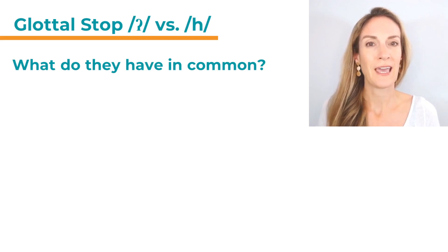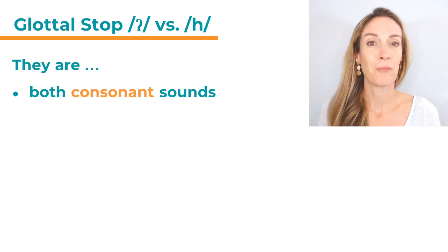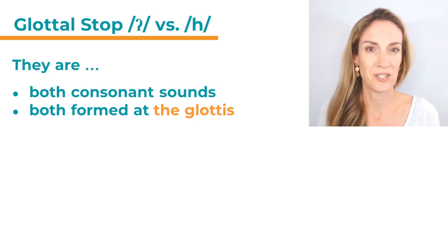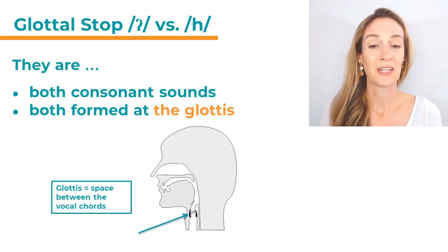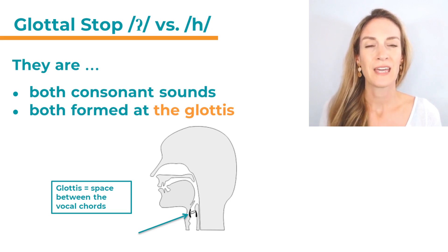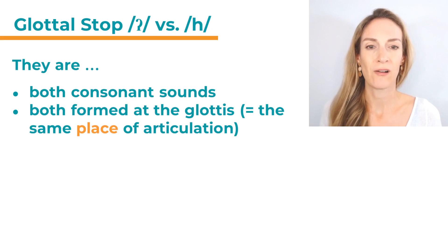First of all, what do they actually have in common? They are both sounds in English and to be specific they are both consonant sounds. They both are formed in or near the glottis, which is really here in our throat. Here's a diagram for you — you can see the vocal cords situated here. That exactly is where the glottis and vocal cords are, and they close and open when you swallow. The glottis is the space between the vocal cords. So they're both consonants and they're both formed in the glottis, which means they have the same place of articulation.